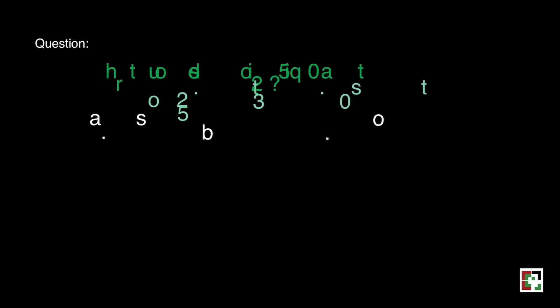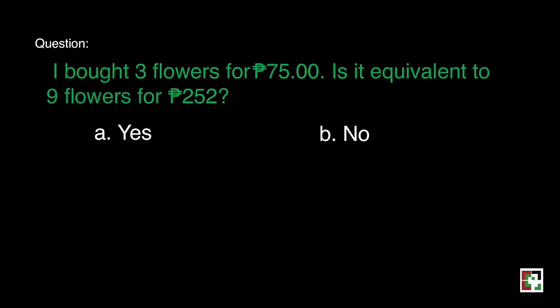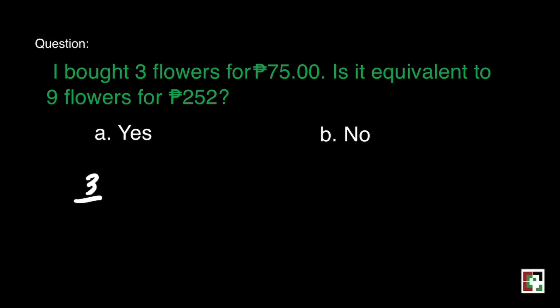Let's move on to the next one. To answer this question, we have to write 3 is to 75 and 9 is to 252 to its lowest term. What number can we divide both 3 and 75? That's 3. 3 divided by 3 is 1, and 75 divided by 3 is equal to 25. This is its lowest term.